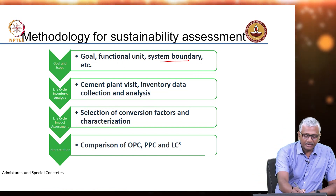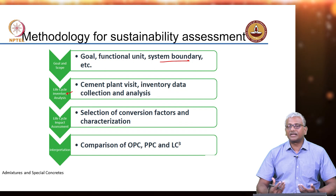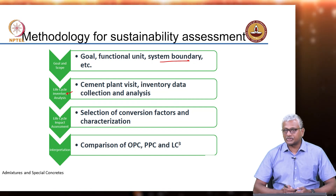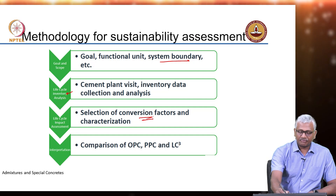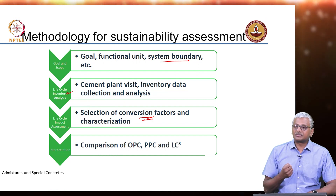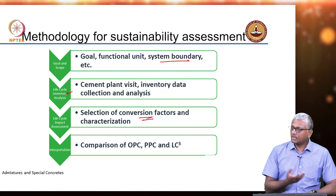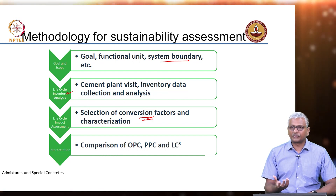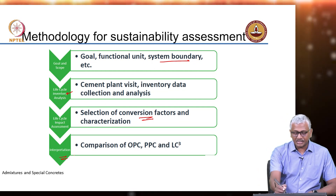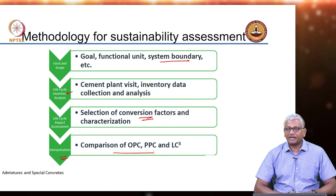The second part is life cycle inventory analysis — here you need to visit cement plants, collect specific data related to energy and CO2, and so on. Then you need to select conversion factors and characterization — what is the net emission applicable to a particular system, what is the energy impact and CO2 impact of each fuel used. Finally, you need to do an interpretation. In this lecture, you will see a comparison of OPC, PPC, and LC3.